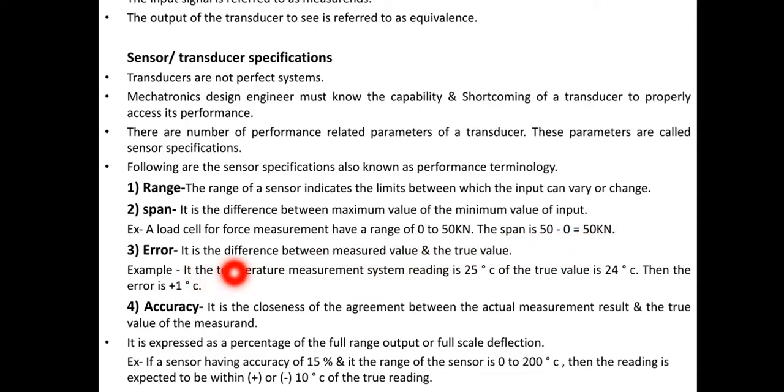Error: it is the difference between measured value and the true value. Example: if the temperature measurement system reading is 25 degree Celsius and the true value is 24 degree Celsius, then the error is plus 1 degree Celsius.